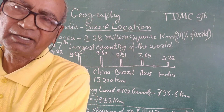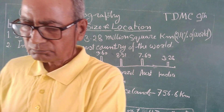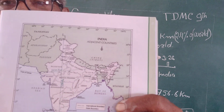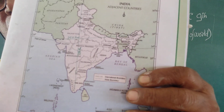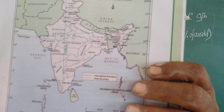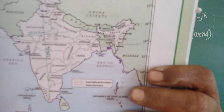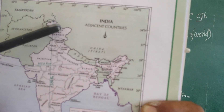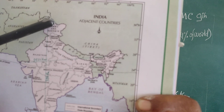Now I will show you a map. You can see in the map the things which I have told you. See carefully — this is the map of India. This is Jammu and Kashmir.